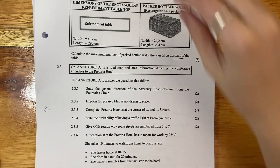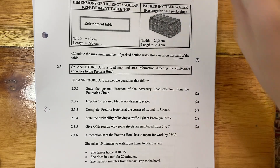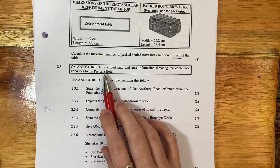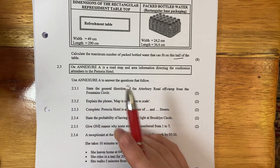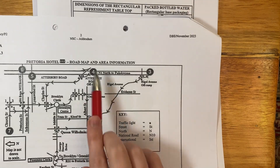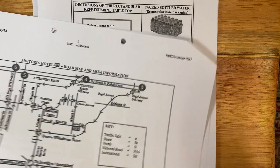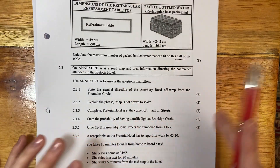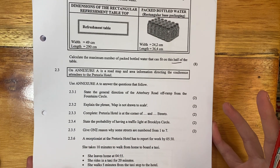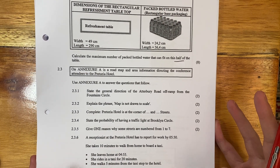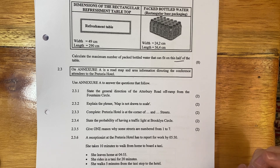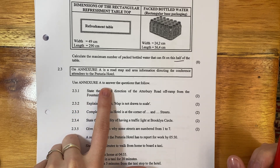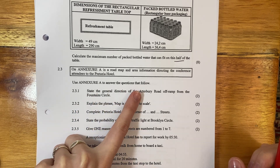Let's look at 2.3 and finish off question 2. On Annex A — when you see that, you go and open it up. There's Annex A. Make sure that you have it. There's a road map and area information directing the conference attendees to Pretoria Hotel. Use Annex A to answer the questions that follow.